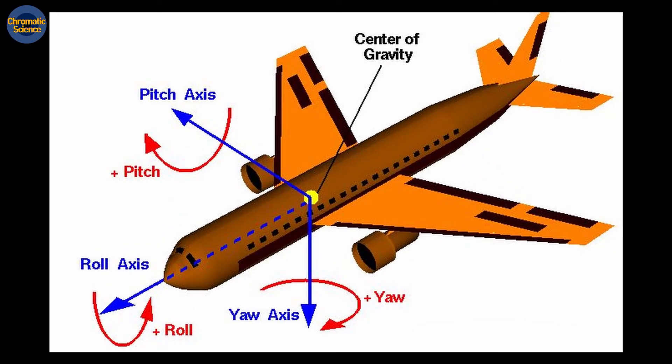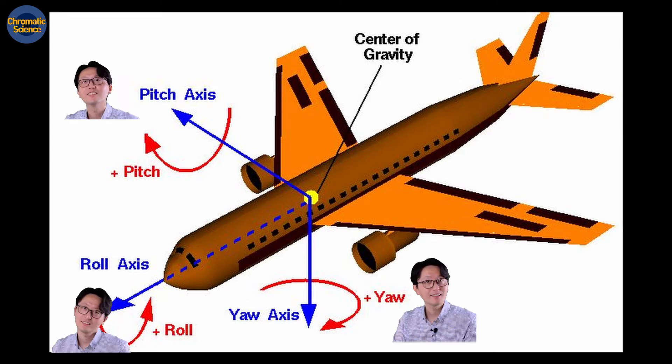We can change the head's orientation using three types of motions: shaking, nodding, and tilting. By combining these three motions, you can make any orientation of the head. If you're interested in drones or air vehicles, you must have heard of pitch, roll, and yaw. These are the three motions that change the orientation of airplanes, and they are equivalent to the head motions we talked about.